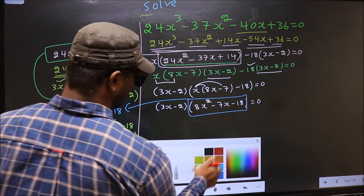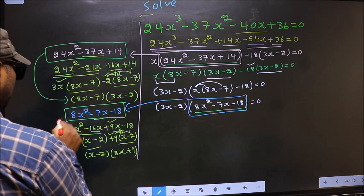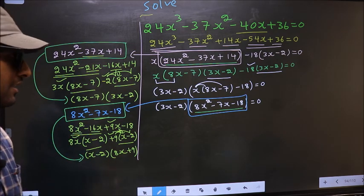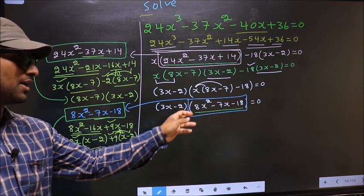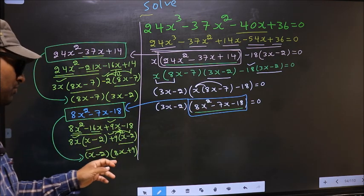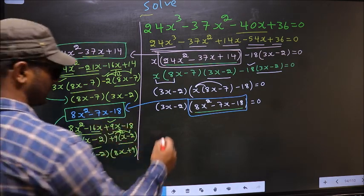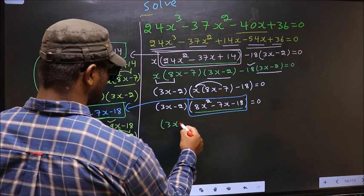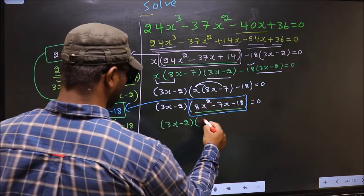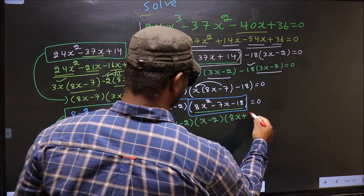Now in place of this quadratic we should write this factored form. So this equation will change to: 3x minus 2 times x minus 2 times 8x plus 9 equal to 0.